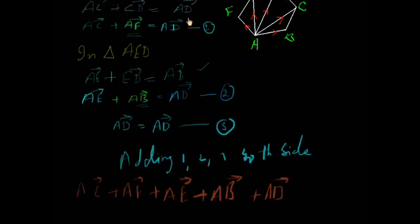In the right side we are seeing just AD vector plus AD vector, 2 AD vectors, plus one more AD vector is equal to 3 AD vectors.